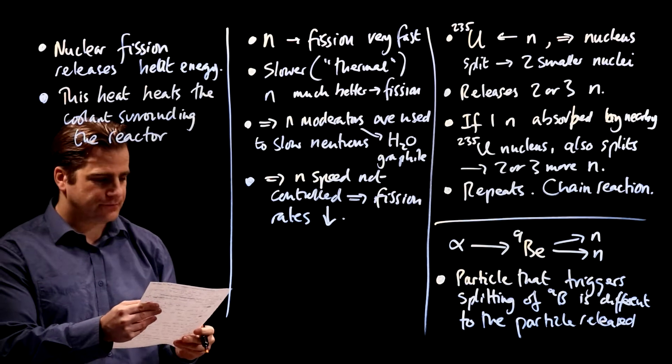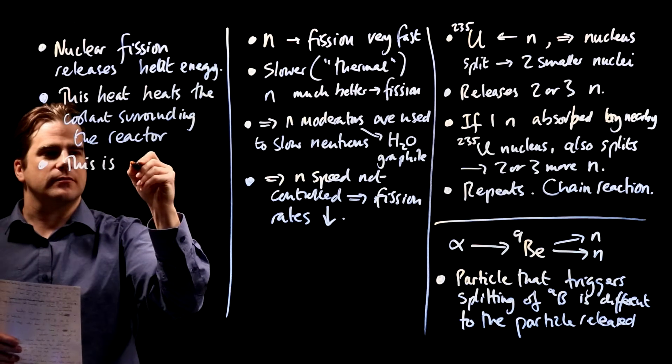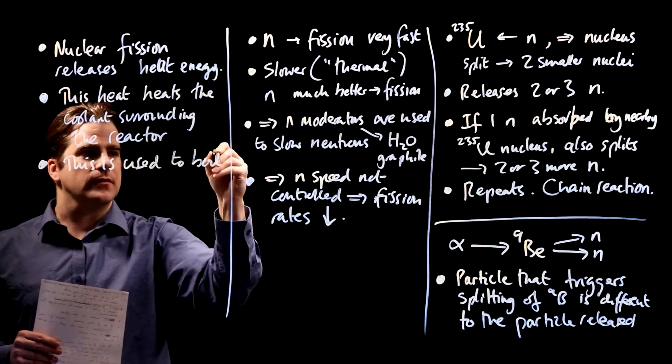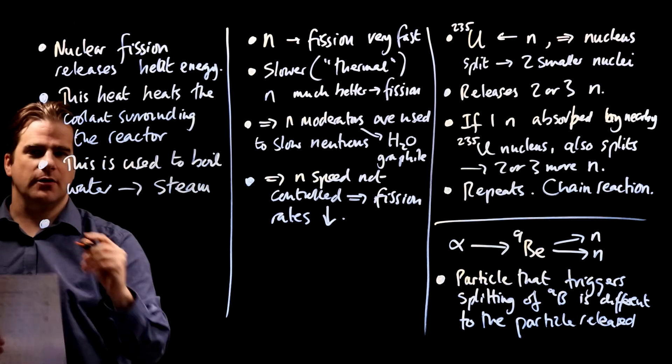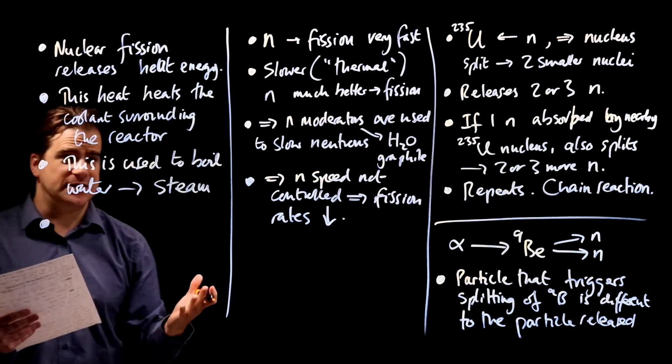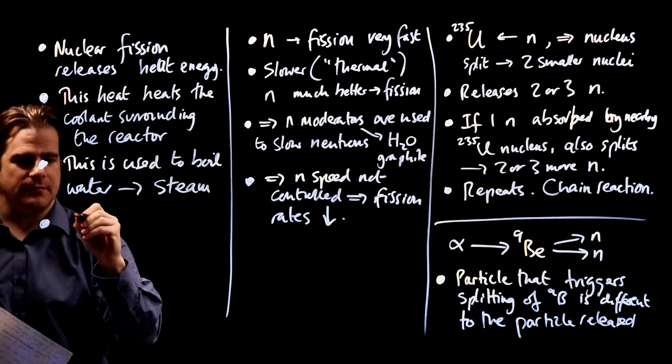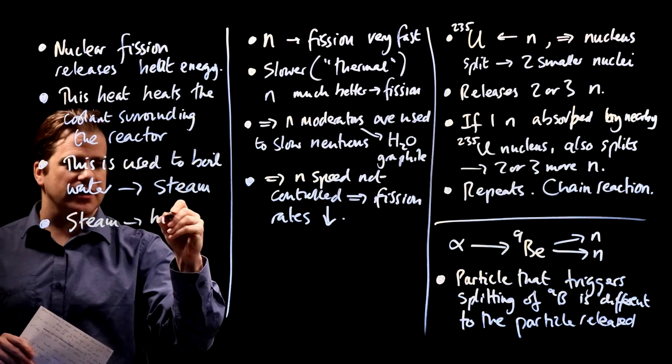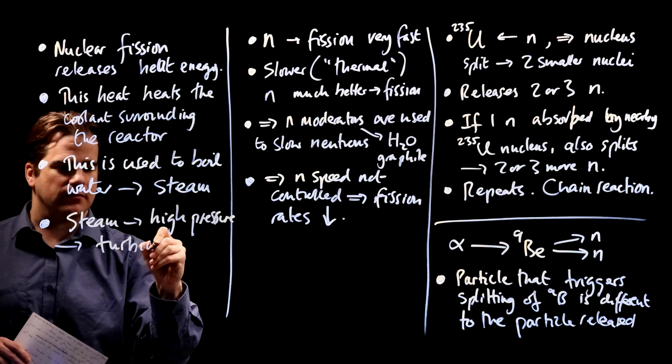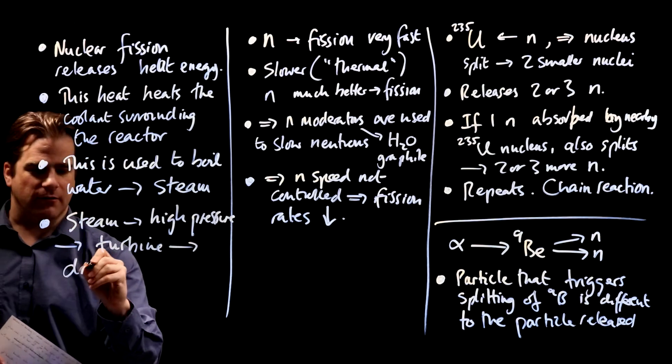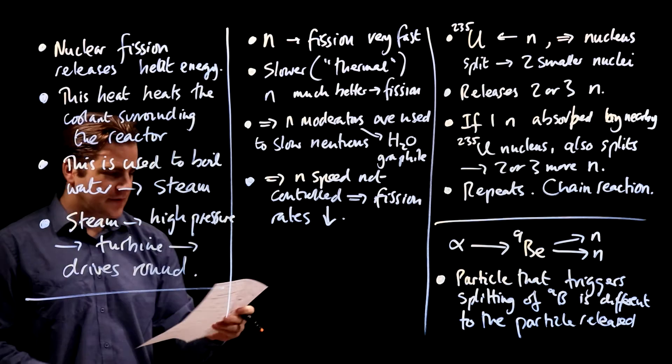Good. Nearly there. This is used to boil water and turn it into steam. So, a nuclear power station, it's like a giant kettle if you like. The objective is just to boil water and turn it into steam. And this steam is sent at high pressure into the turbine, which drives the turbine round. Boom. Full marks in the bag. Excellent. There we go.